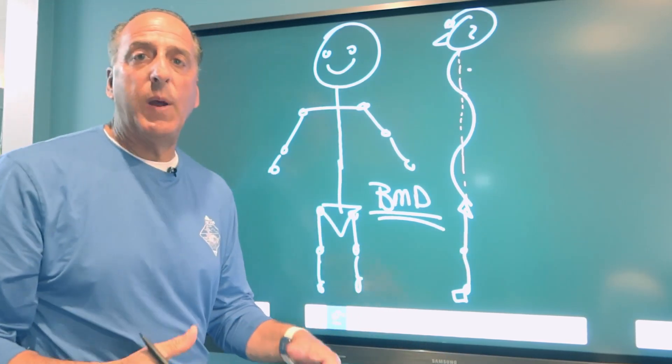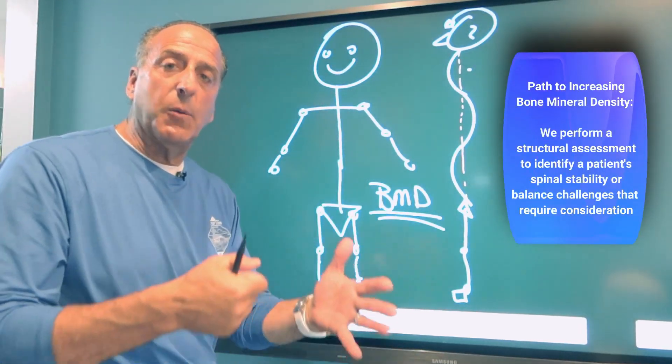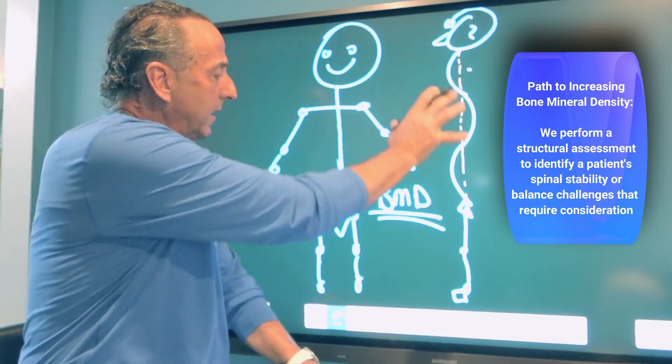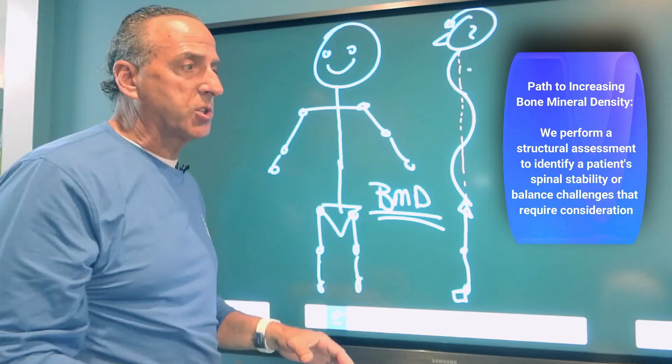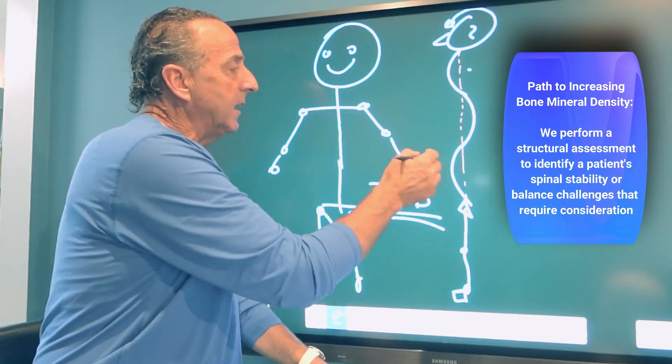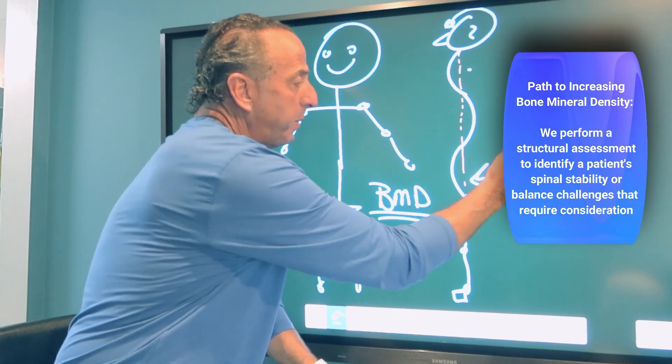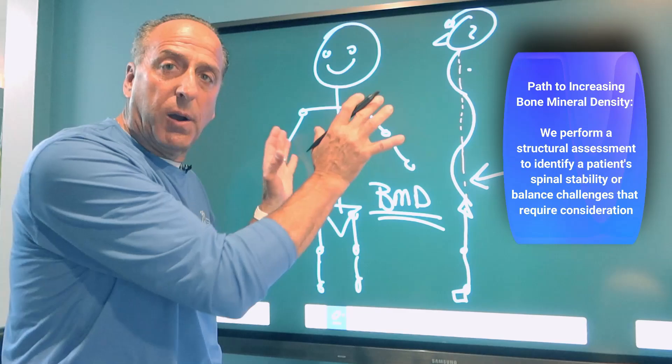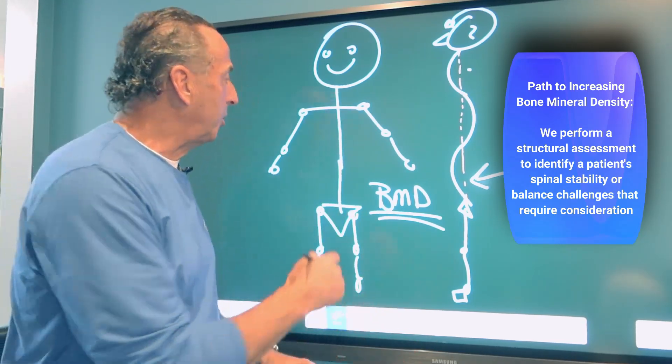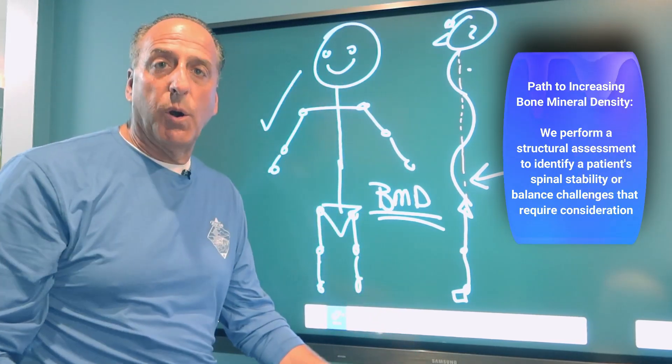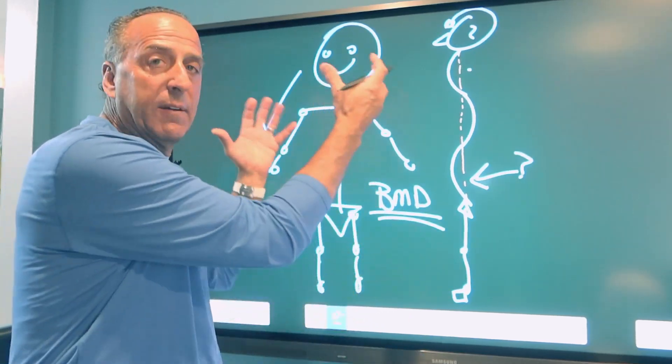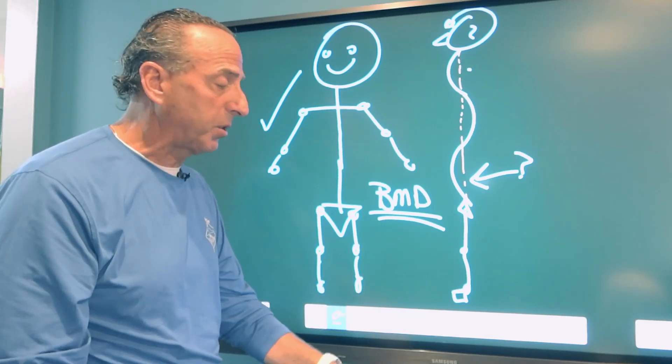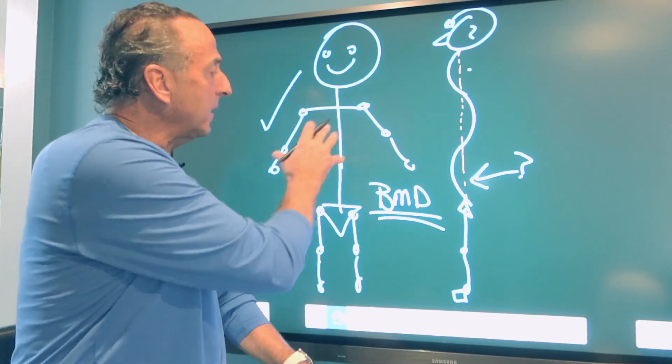So when we talk about spinal stability and balance, this is what we're talking about. Because we're trying to increase bone mineral density. How do we do that? We have to put load through the bone tissue, meaning that we have to stress that bone. When we take a look at the structure with x-rays, we want to find out is there any issue with the lumbar spine that we have a red flag on? Is there any problem with any part of the spine that we have to be aware of? That's why we have to do our structural assessment, our 3D assessment.